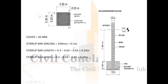Cover is 30mm, stirrups bar spacing is 100mm. Stirrup inner dimension after deducting cover: 300 − 30 − 30 = 240mm = 0.24 meters. So the stirrup bar width and depth are both 0.24 meters, deducting 60mm (30+30) from 300mm.